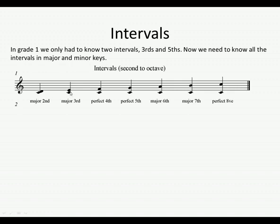C with an E above — major third. A C with an F would be called a perfect fourth. A C with a G would be called a perfect fifth. C with an A would be called a major sixth. And a C with a B — a major seventh. And then this octave here, which would be a C to a C, would also be perfect — a perfect octave.